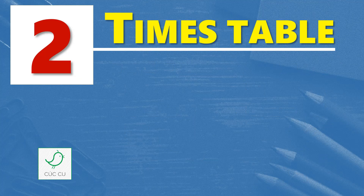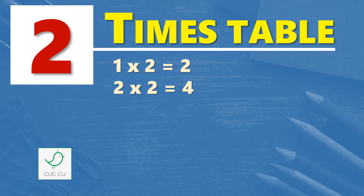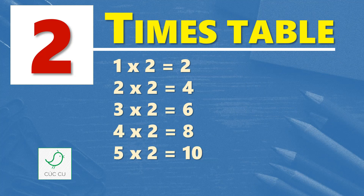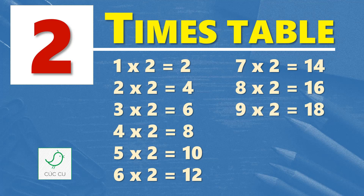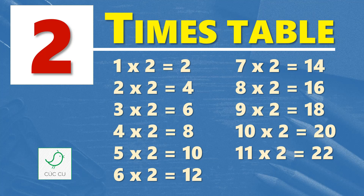Multiplication table of 2. 2 times table. 1 times 2 is 2, 2 times 2 is 4, 3 times 2 is 6, 4 times 2 is 8, 5 times 2 is 10, 6 times 2 is 12, 7 times 2 is 14, 8 times 2 is 16, 9 times 2 is 18, 10 times 2 is 20, 11 times 2 is 22, 12 times 2 is 24.